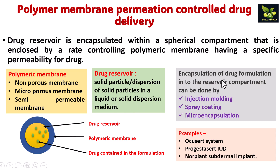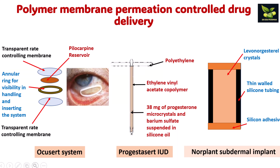The polymeric membrane can be non-porous, microporous, or semi-permeable. The drug reservoir contains solid particles or dispersions in liquid or solid dispersion media. Encapsulation of the drug formulation into the reservoir compartment can be done by injection molding, spray coating, or microencapsulation. Examples are Ocusert, Progestasert IUD, and Norplant subdermal implant. In the diagram, you can see the drug reservoir surrounded by the polymeric membrane — the permeation control delivery system uses diffusion as the main mechanism.